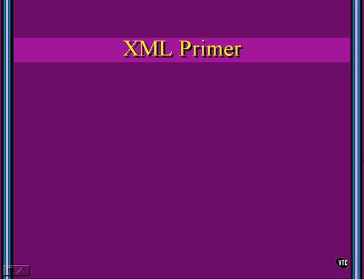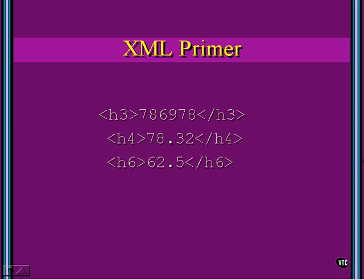XML is basically a graduation of HTML, and I want to show you this by showing you some code. Just by looking at this, what can you tell me about it? Well, if you know HTML, about all we can determine from these numbers is that this HTML code is going to display this number and it's going to display it at a heading level 3 size, which tells us relative to other text on the page what size it is.